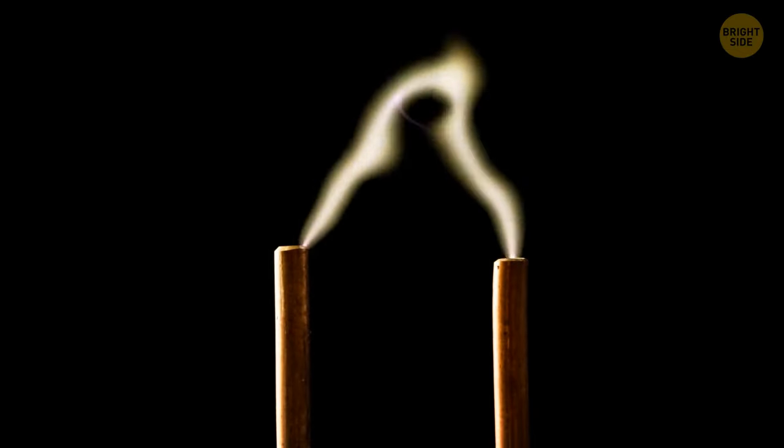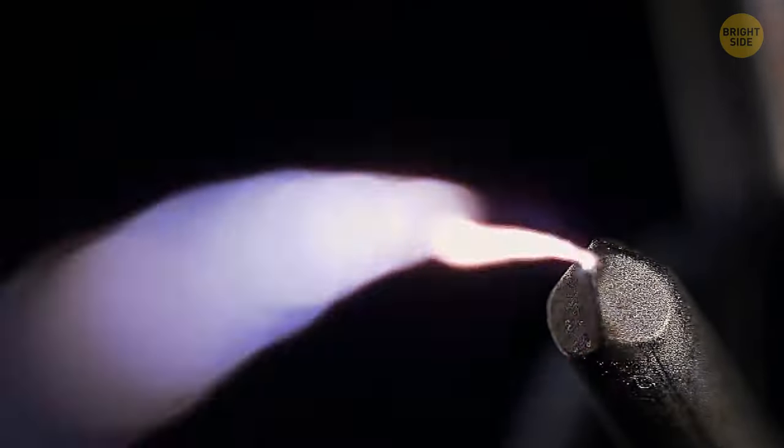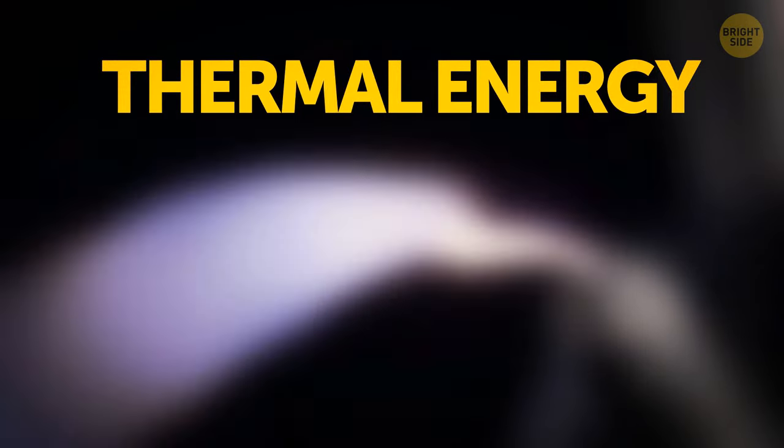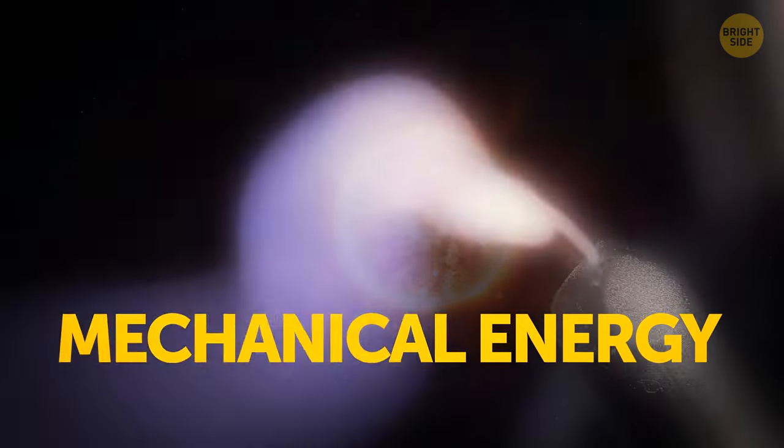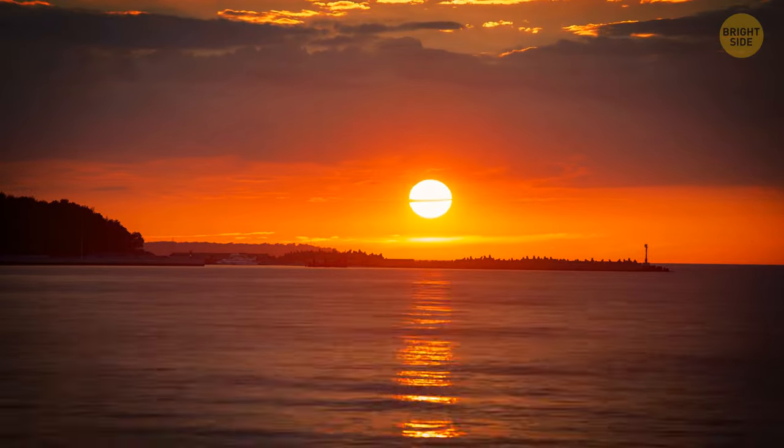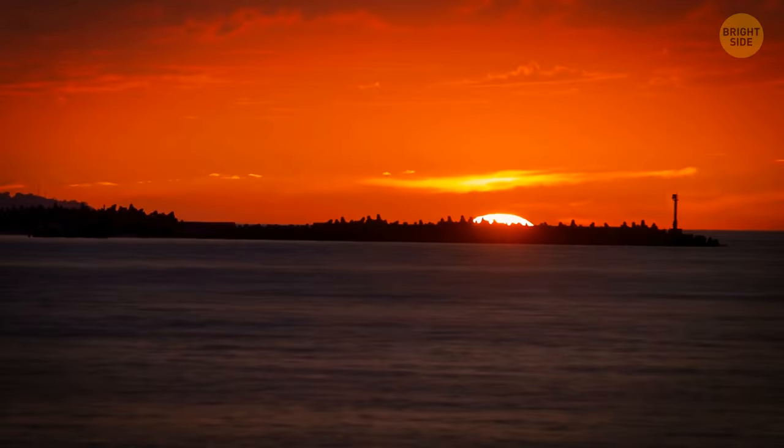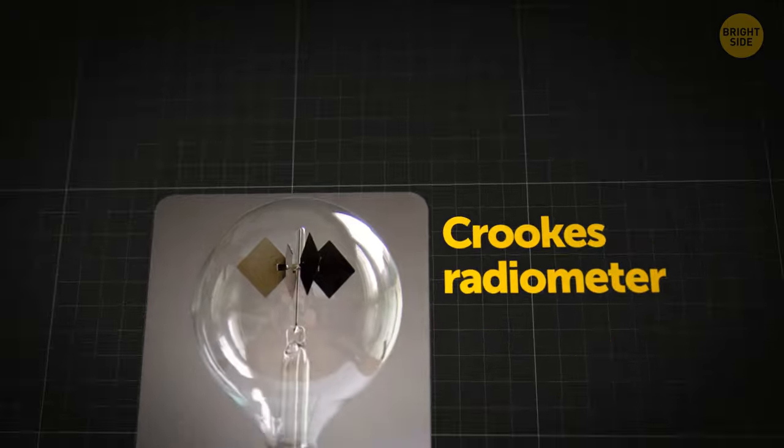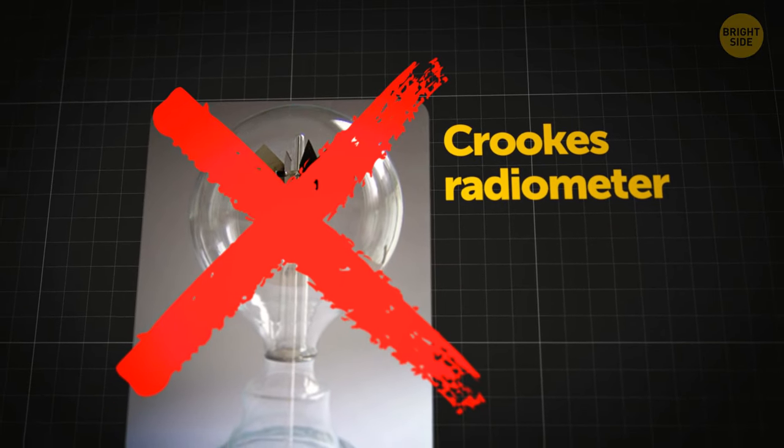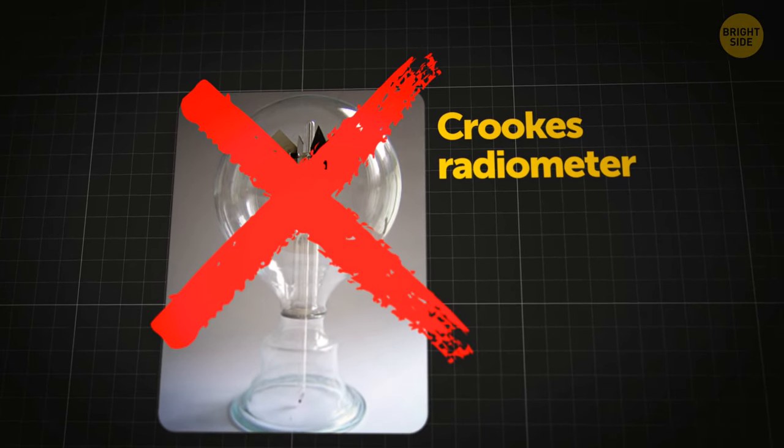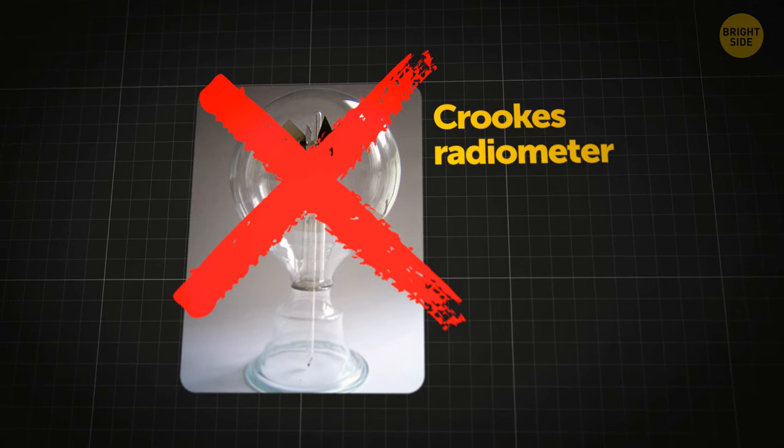And the amount of energy created by the rotation is minuscule. It wouldn't be able to generate electricity. The device simply converts thermal energy into mechanical energy and needs light to work. Sunlight comes to us free of charge, but the sun doesn't shine 24-7. So Crookes' radiometer isn't a true perpetual motion device. It's more of a neat science experiment you can try out at home.